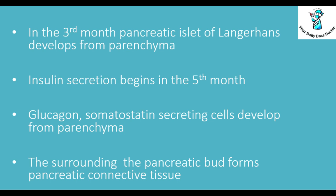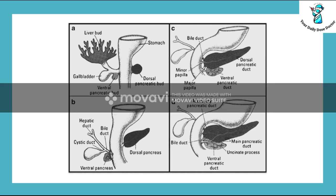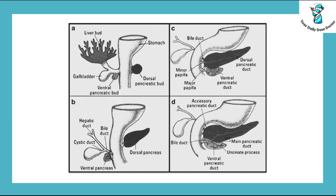If we look at this picture, we can see the ventral and dorsal buds develop on the opposite sides of the primordial foregut. In picture B, we can see the ventral pancreatic bud develops from the hepatic diverticulum arising from the duodenum, and the dorsal pancreatic bud arises separately from the dorsal aspect of the duodenum.